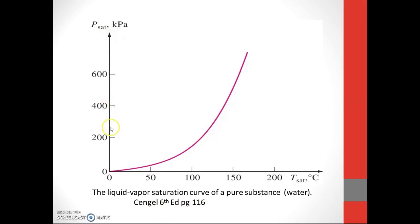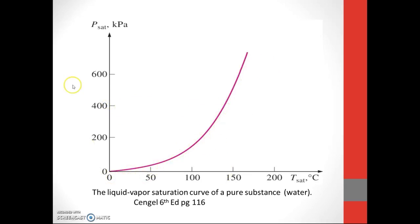This is the pressure versus temperature diagram — this is how they relate. At 50 degrees Celsius, at a given temperature, what is the P_sat? At 100 degrees Celsius, what is the P_sat? The same goes for pressure: at 400 kilopascal, what is the T_sat? This is how it relates — the liquid-vapor saturation curve of a pure substance.